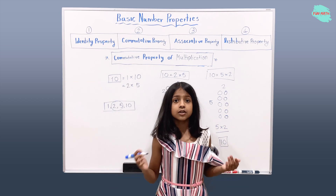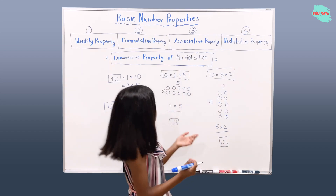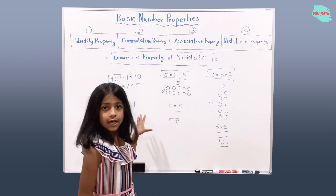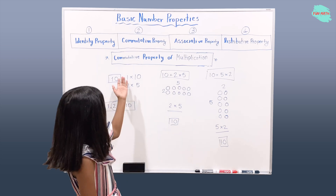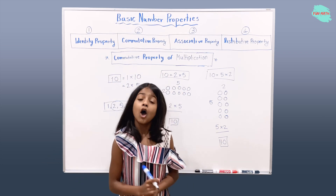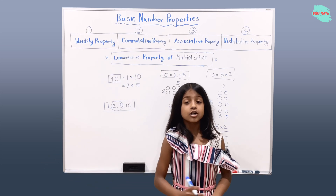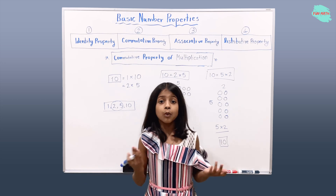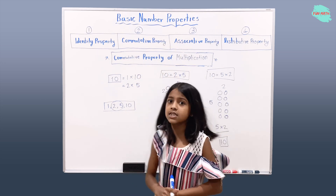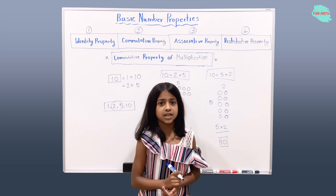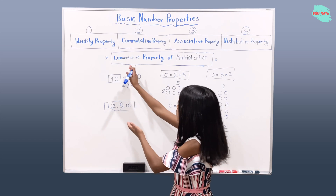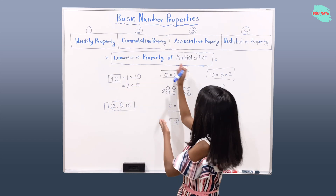So everything we solved today is called the commutative property of multiplication. Now let's review what we learned. We learned about basic number properties — we had 4 different types — but today we focused on the commutative property of multiplication.